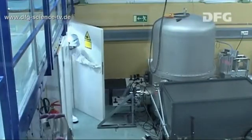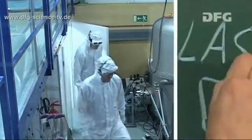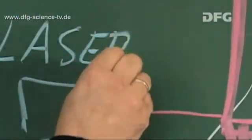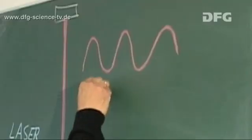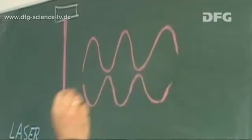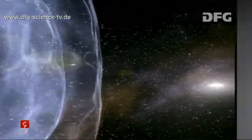The gravitational wave detector is based on the operating principle of a so-called interferometer. The instrument uses the wave properties of light to measure the extremely small changes in length that are caused by gravitational waves.